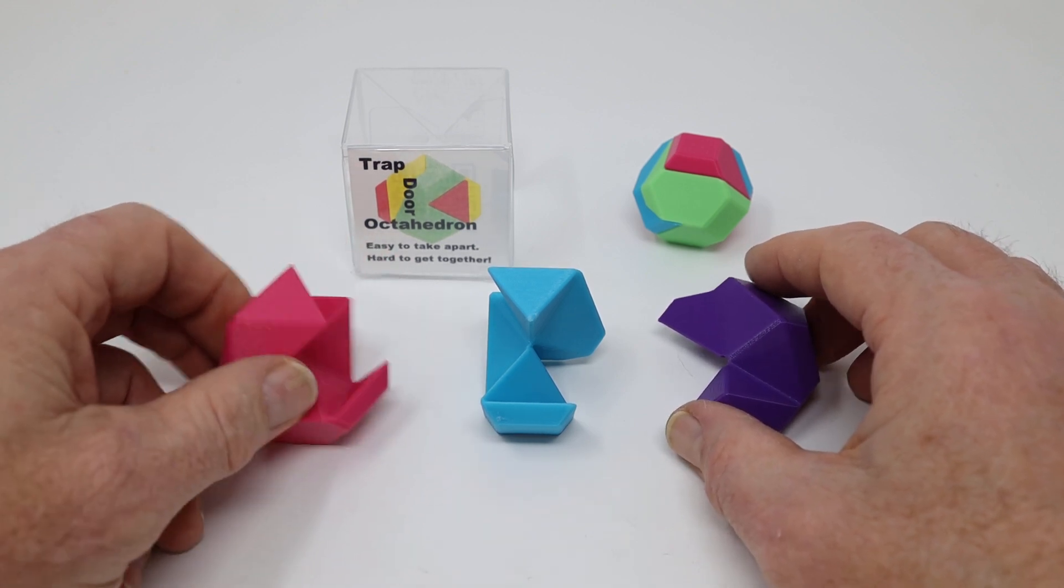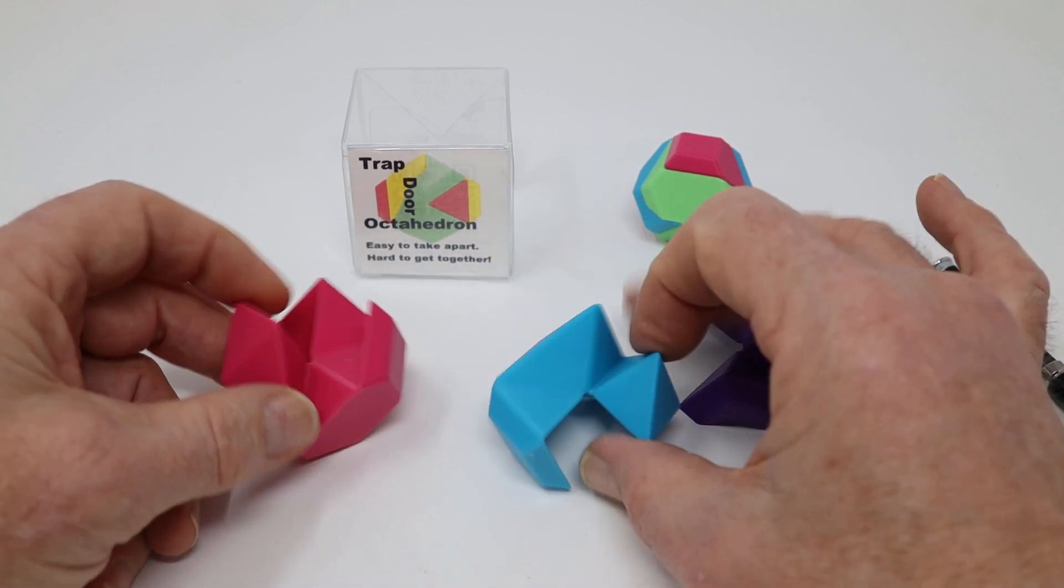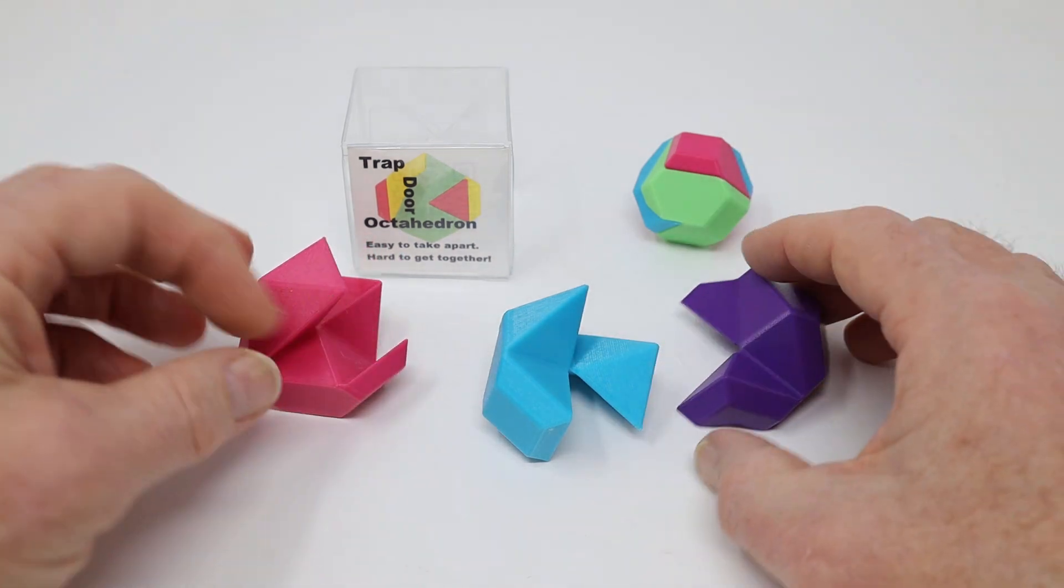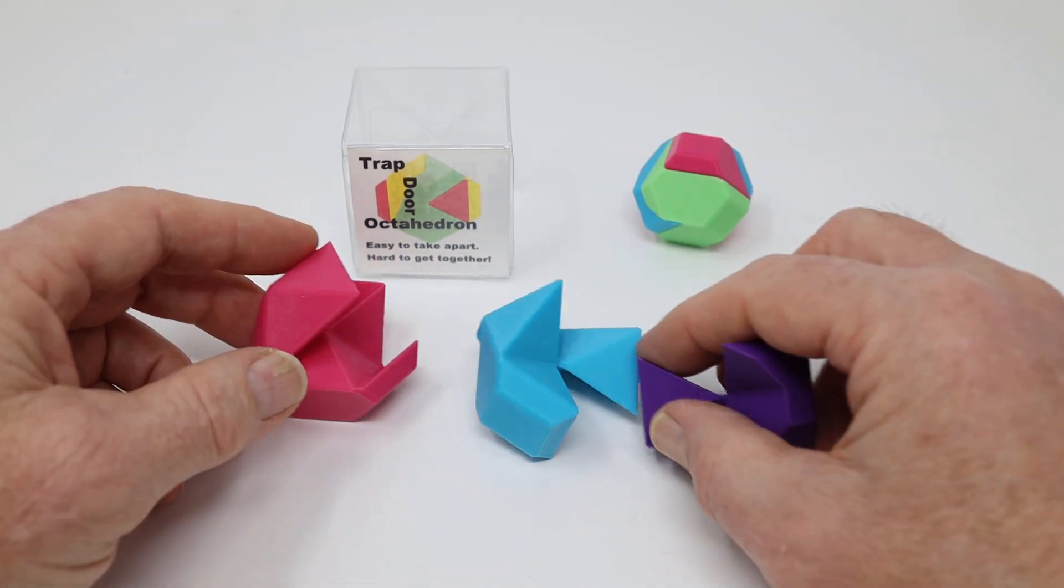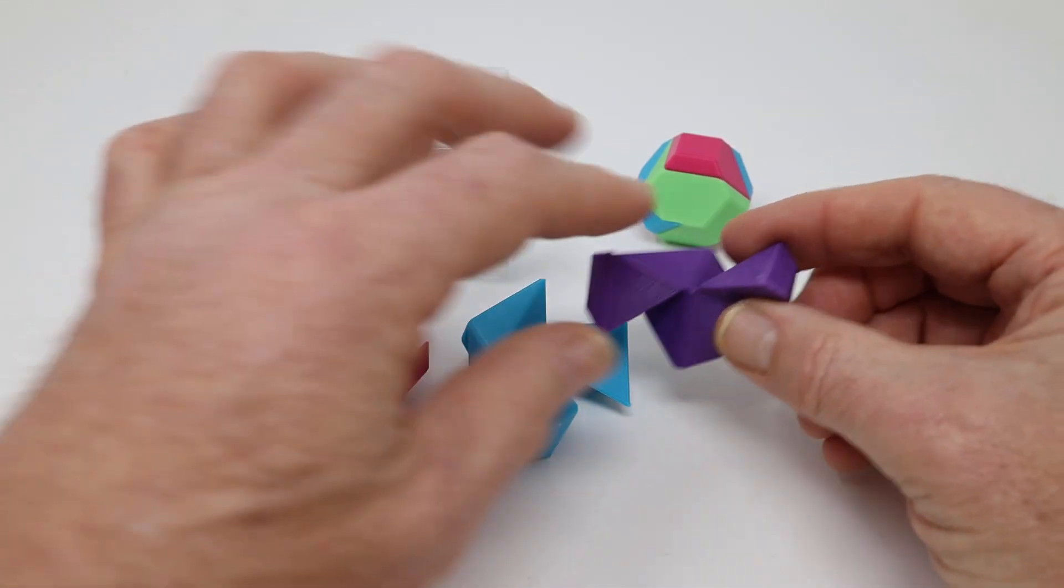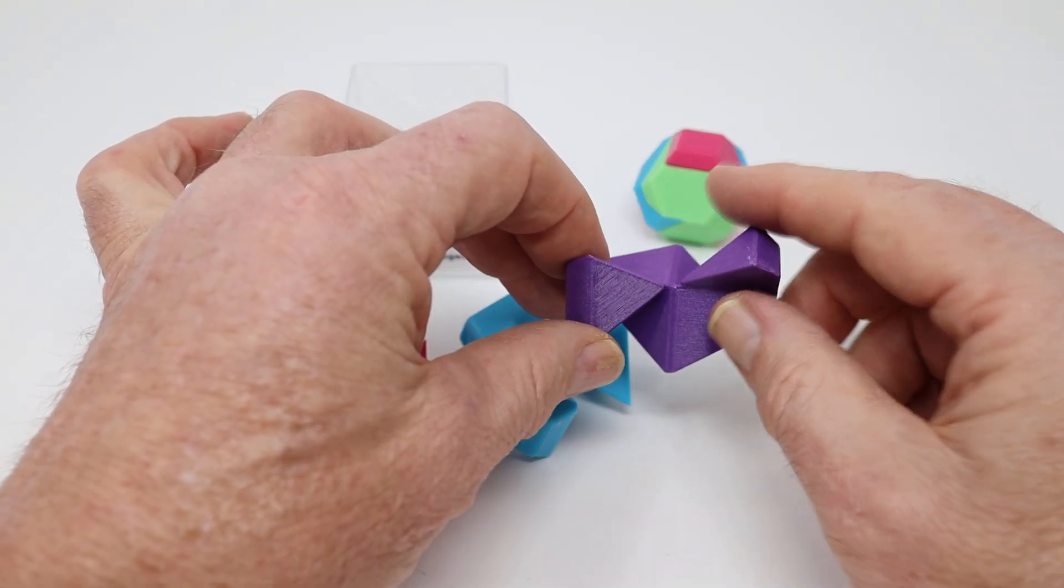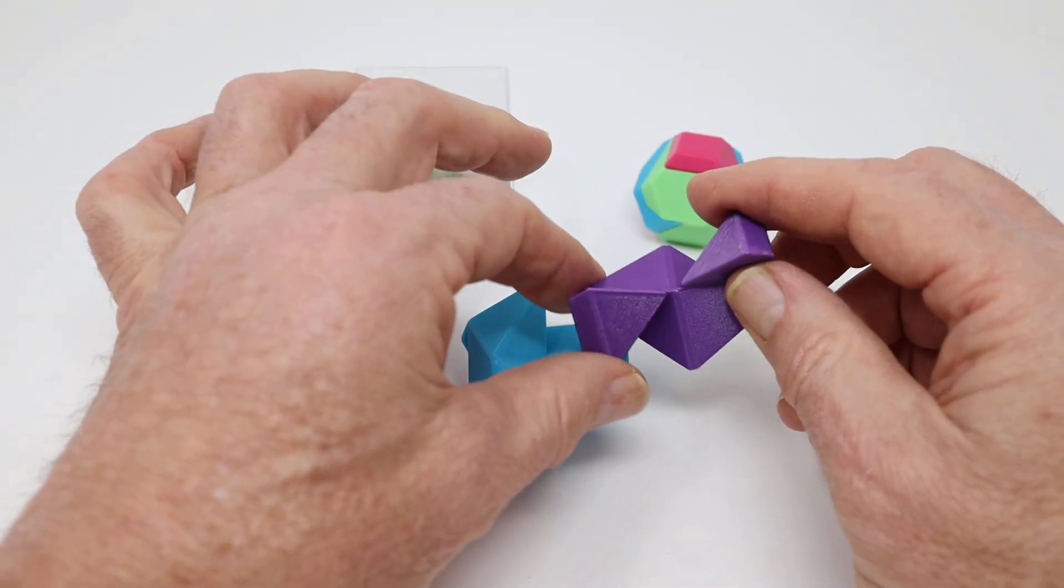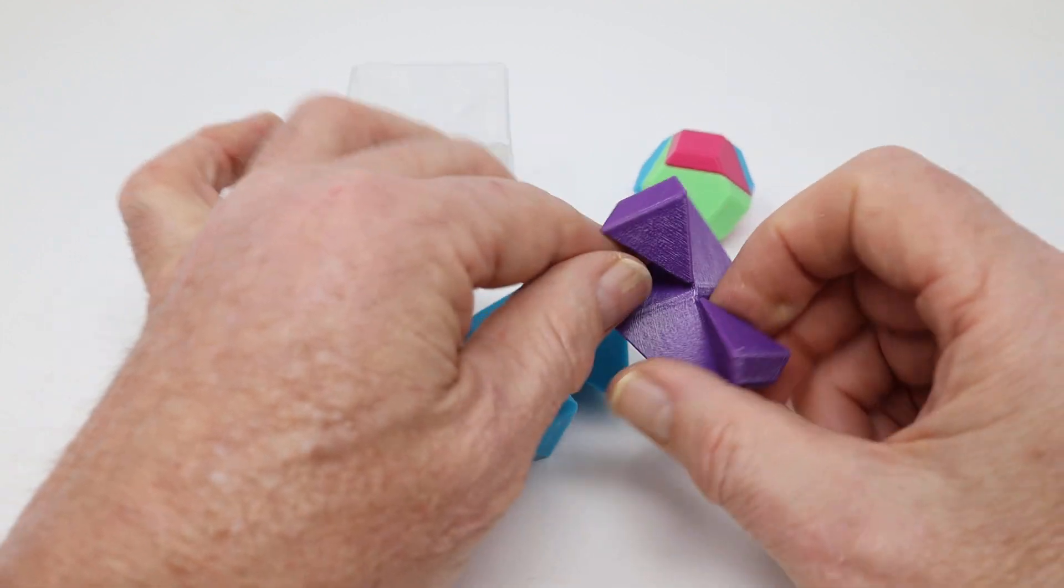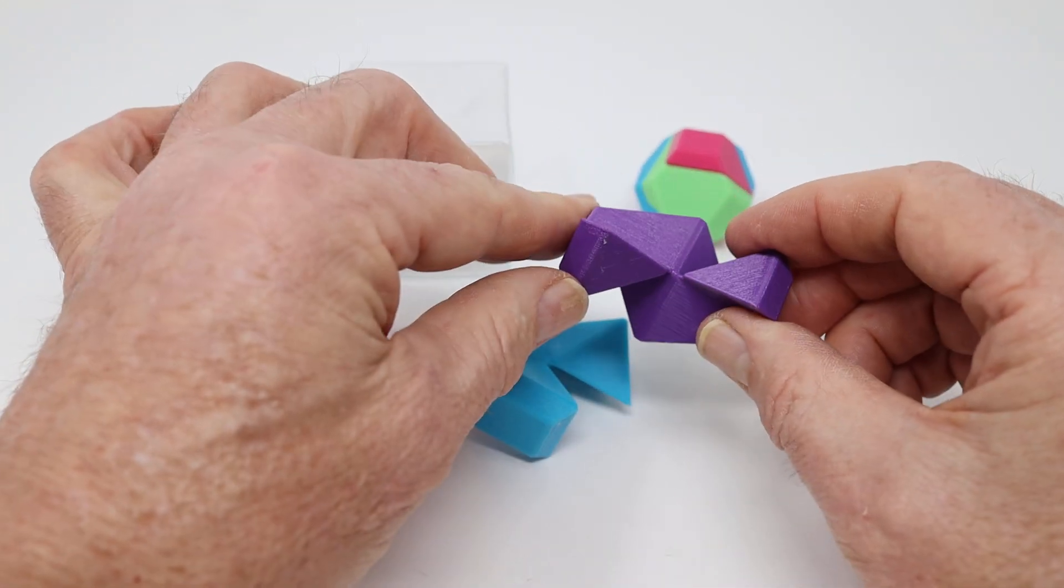So the first thing to do is to notice that the three pieces are all different. One of them is smaller than the others and it's this purple piece. There's also a point of rotational symmetry about that point where if you spin it 180 degrees it's unchanged.